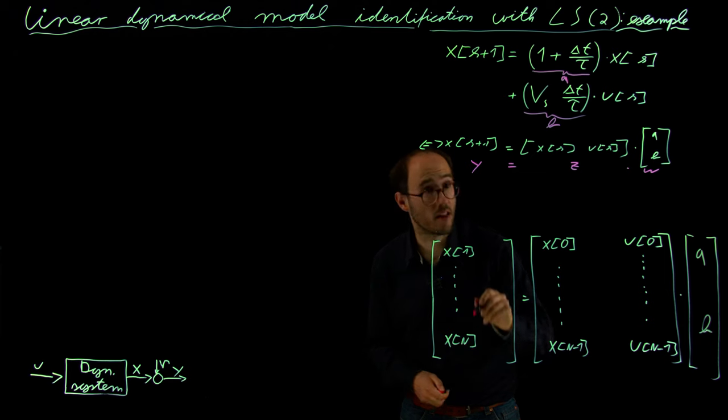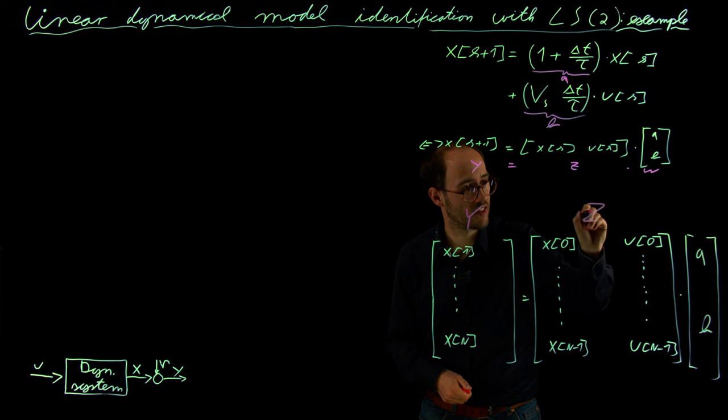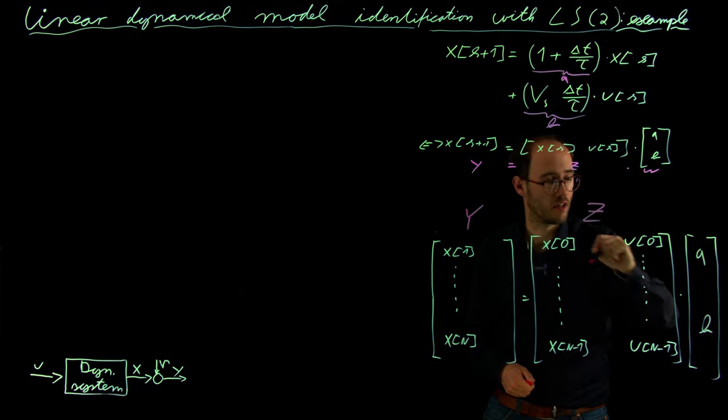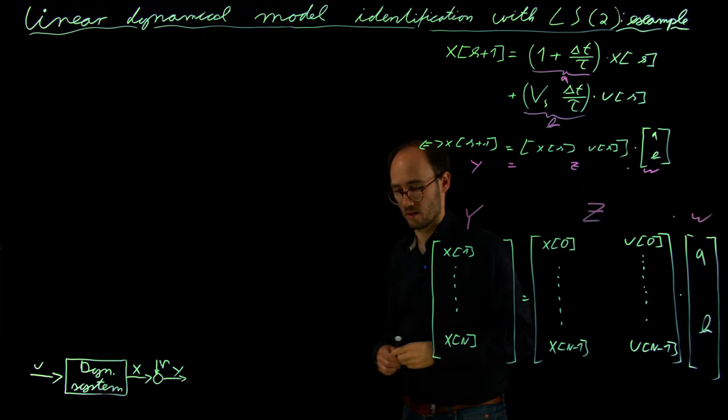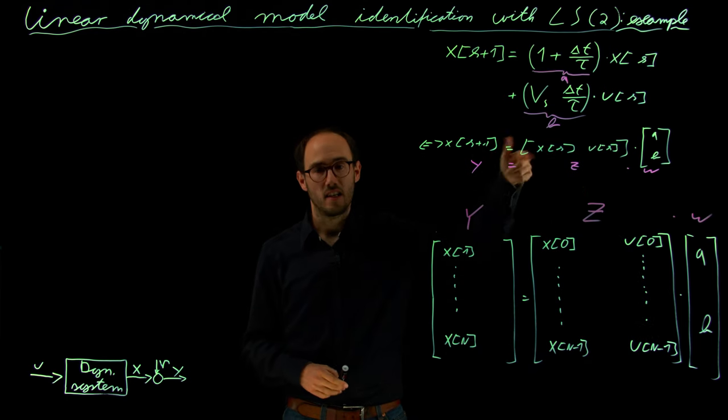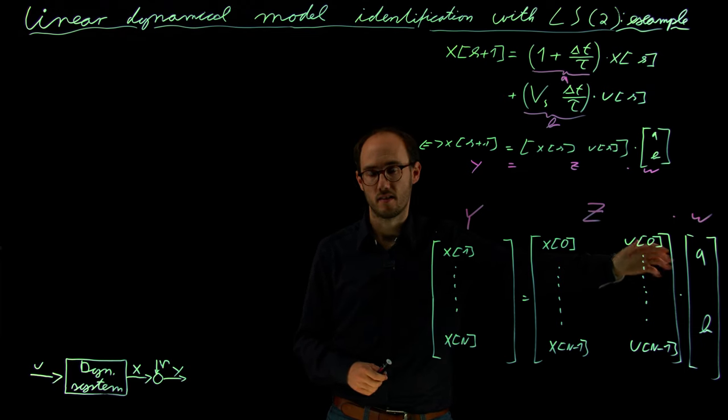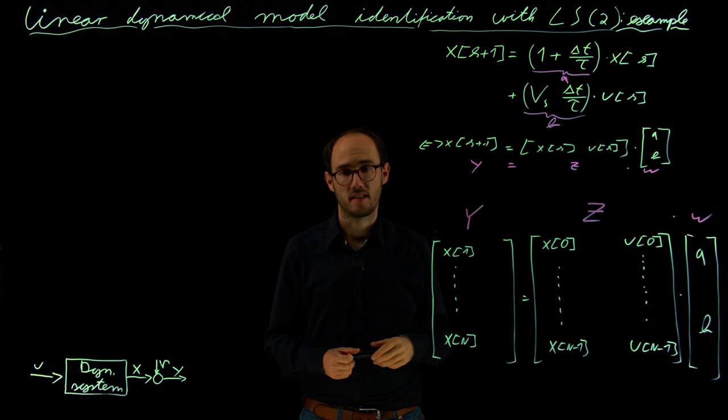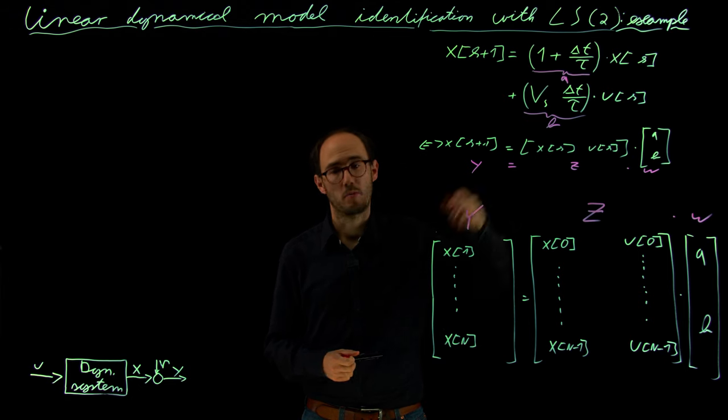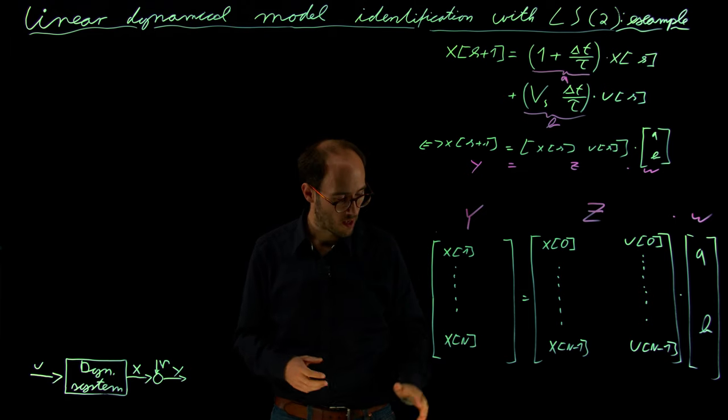So that is here then capital Y, our outputs, Z, our regressor matrix, times w, our unknown parameter vector. As this is a single input, single output system, we just need to apply the least squares solution once and not multiple times, as discussed in the previous video. If that would be a multi-output or multi-input system, we would need to apply that more times.